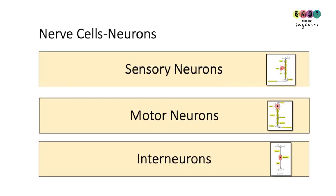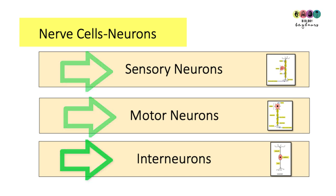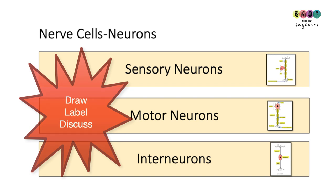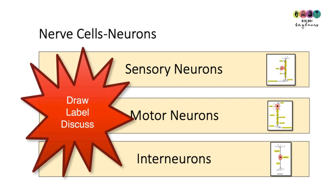The human body is made up of trillions of cells. Your nervous system is made up of nerve cells, and particular ones called neurons are very important. We have sensory neurons, motor neurons, and interneurons, and we have to be able to draw, label, and know the function of each of these.